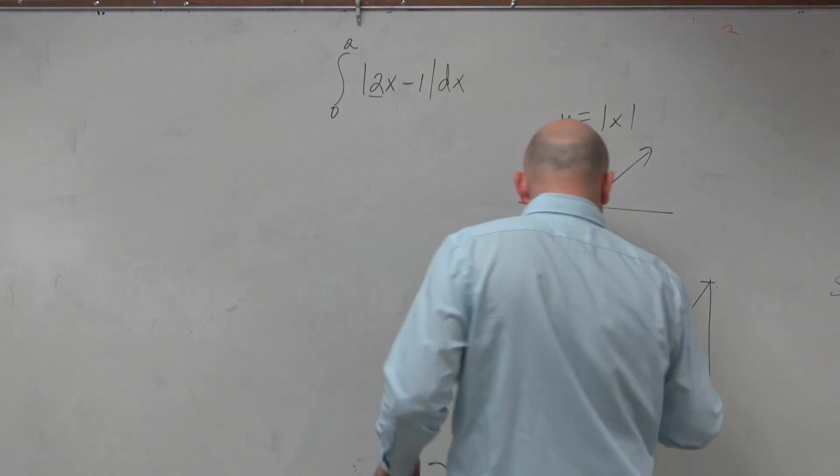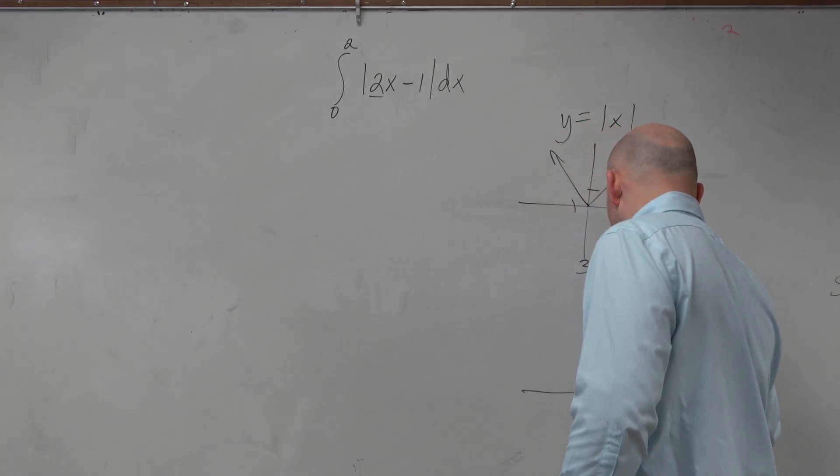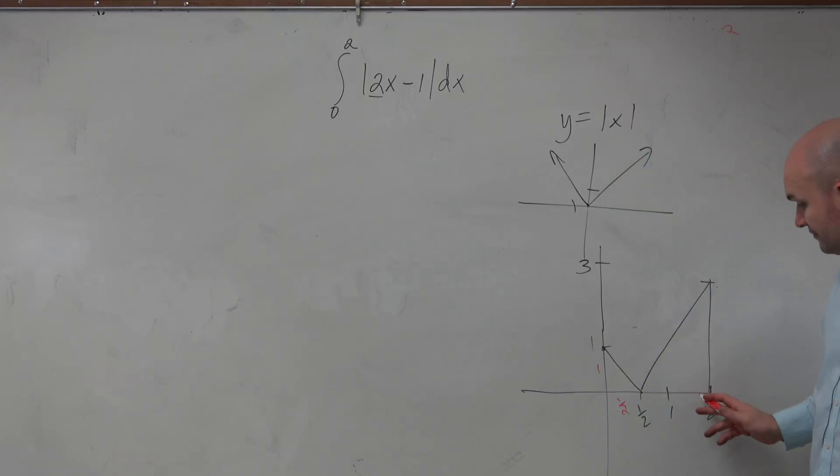All right. So from here to here is 1. From here to here is 1 half. From here to here is 1 and 1 half. Does anybody know what 1 plus 1 half is? 3 halves. And then from 0 to 3 is going to be 3.